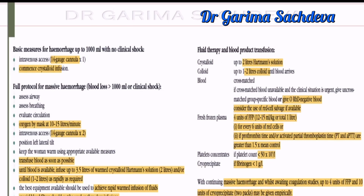To repeat: blood — initially O-negative until group-specific blood is available. FFP — for every 6 units of PRBCs, give 4 units of FFP, or if PT/PTT is more than 1.5 to 2 times normal. Platelet concentrates — give if platelet count is less than 50,000. Cryoprecipitate — give if fibrinogen level is less than 1 gram per liter.